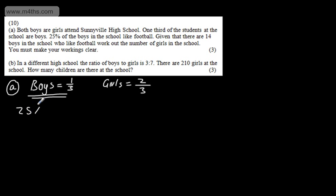We know that 25% is equal to 14 boys. If I want 100%, I need to multiply 14 by 4. That's going to give me 56. So, we can say that there are 56 boys. So, we can say from this, one third will be equal to 56.